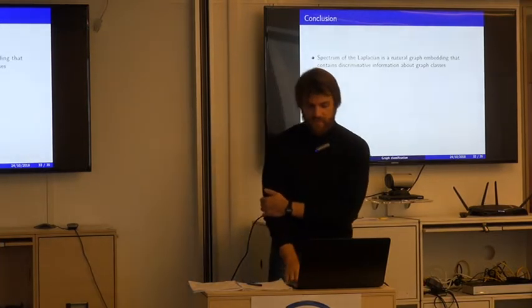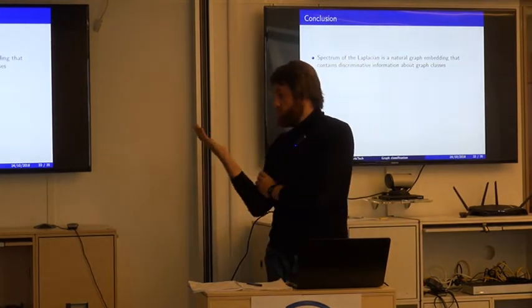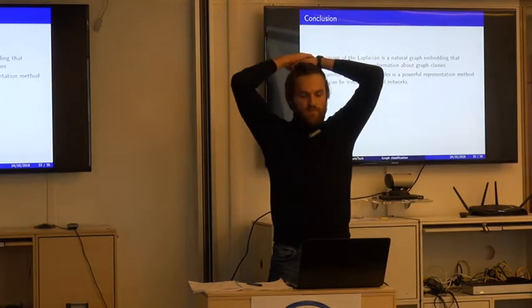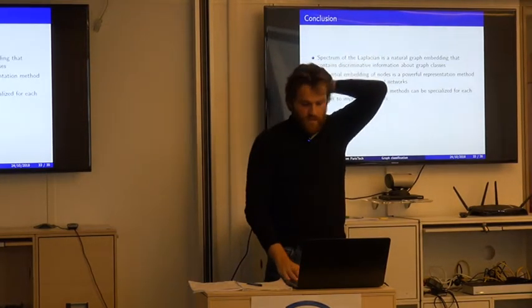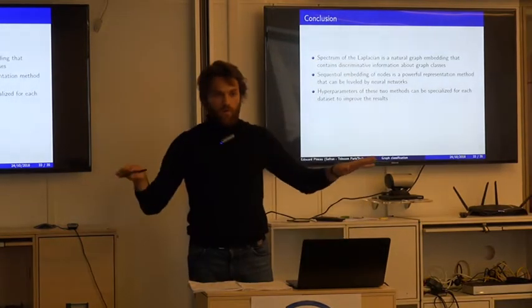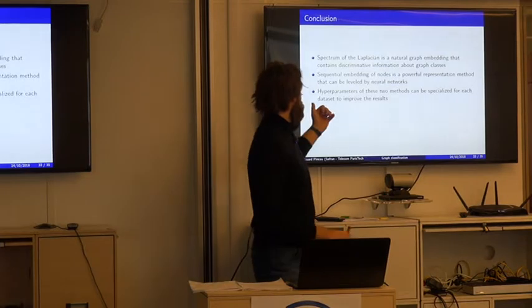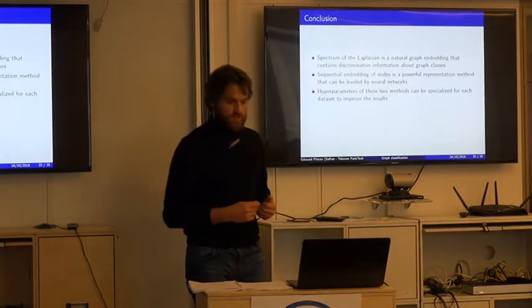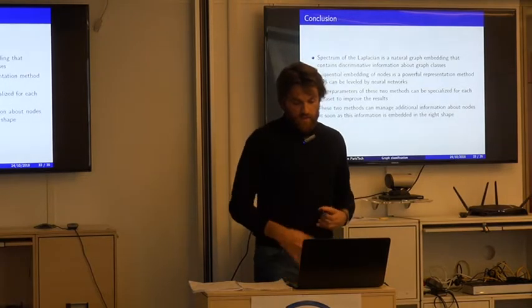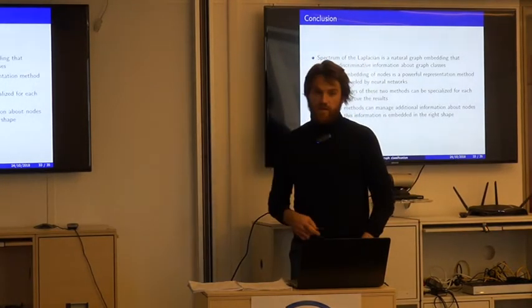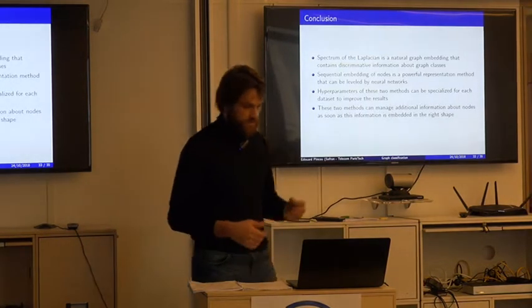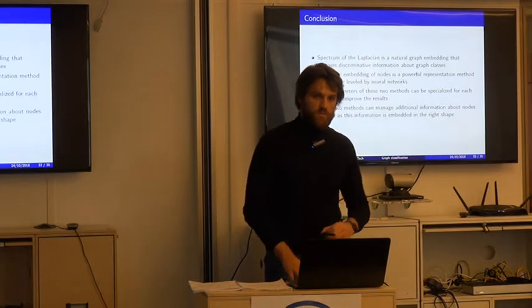Conclusion: the spectrum of the Laplacian is a natural graph embedding containing discriminative information about graph classes. The sequential labeling of nodes is a powerful representation method that can be leveraged by neural networks. Hyperparameters were the same across all datasets, so results can be improved by specializing them. Both methods can also manage additional node attribute information — here we only used adjacency, but node attributes can be incorporated.